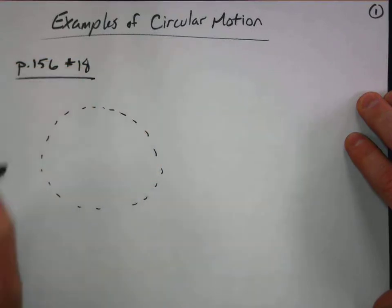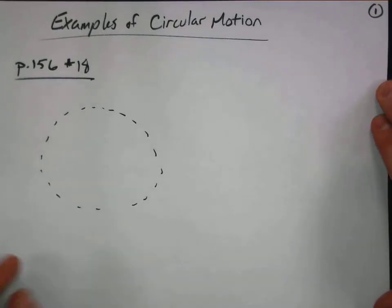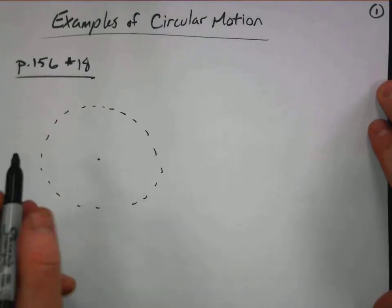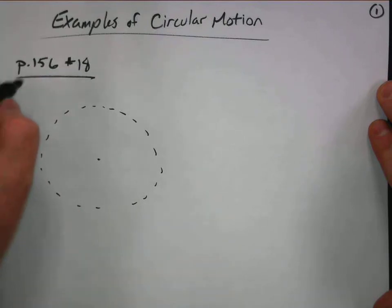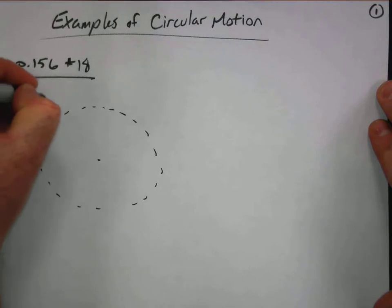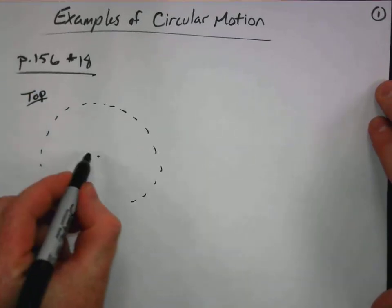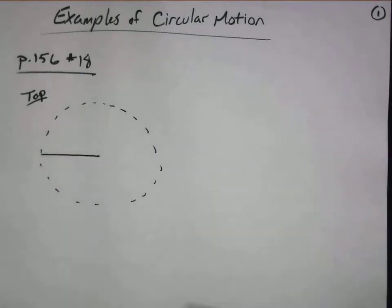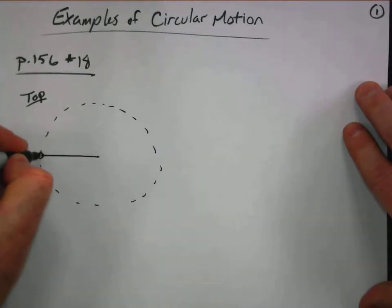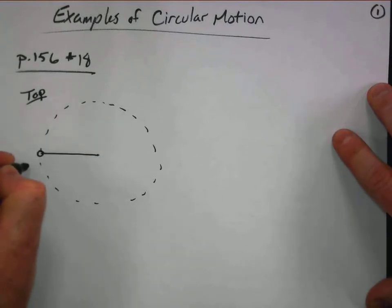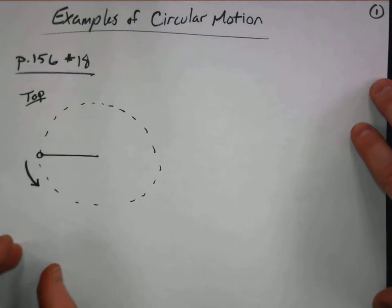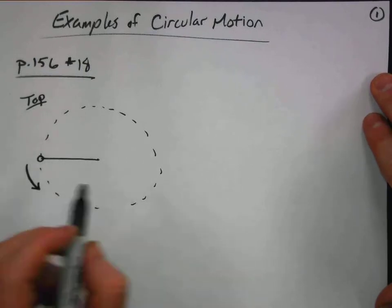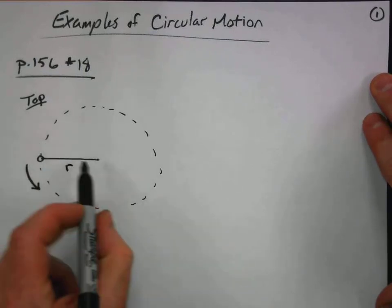Here's the circular pathway. What I need to do is identify the location of the center of the circle. One of the best ways to view this is looking down from above, so we're going to take a top view. I'm going to show when this thing is in this position here — the object moving through the circle, headed in this direction.